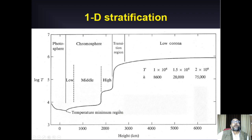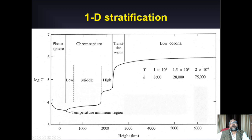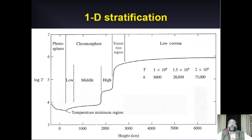Now let's move to the atmosphere of the sun. We were talking about the interior, then we came to the surface. In this plot, the y-axis shows temperature and x-axis shows height on the solar surface. What is the solar surface is not a clear picture, because the sun is not a rigid solid body — it's basically determined by the photons in optical wavelengths that escape, which is called the photosphere.